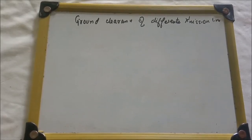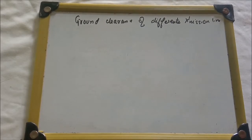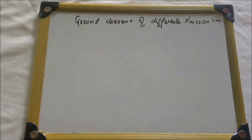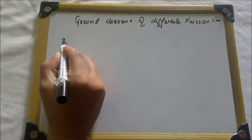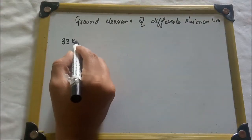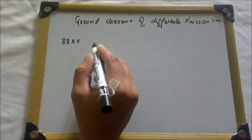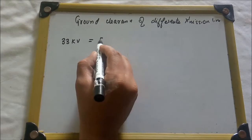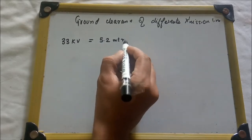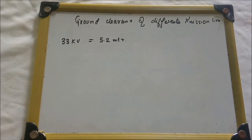Today we will see the ground clearance of different transmission lines — how we calculate the ground clearance of a transmission line. The minimum ground clearance of a 33 kV insulated electrical conductor is 5.2 meters.